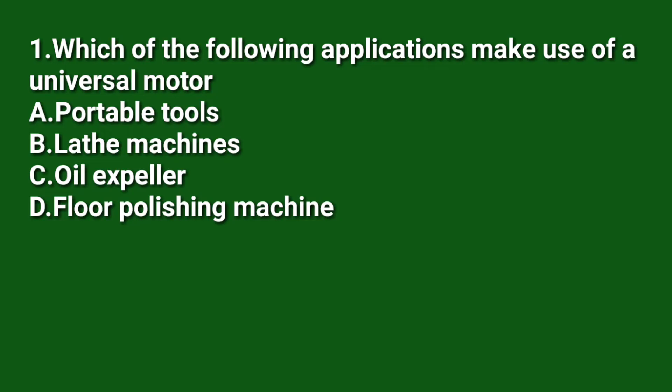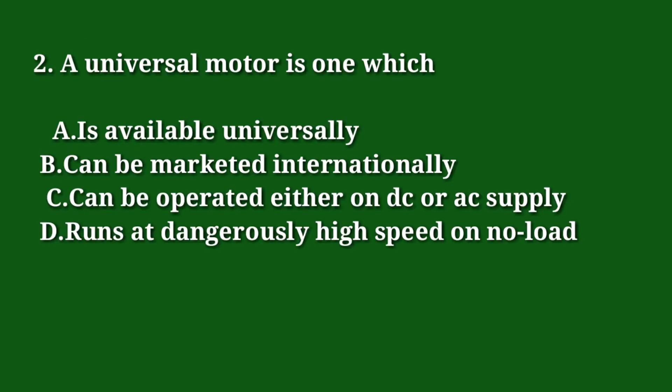Now let us discuss quiz questions on the universal motor. Question 1: Which of the following applications makes use of a universal motor? A) Portable tools, B) Lathe machines, C) Oil expeller, D) Floor polishing machine. The answer is portable tools — lathe machines, oil expellers, and floor polishing machines do not use universal motors. Question 2: A universal motor is one which — A) is available universally, B) can be marketed internationally, C) can be operated on either DC or AC supply, D) runs at dangerously high speed on no load. The answer is C — it can be operated on either DC or AC supply.